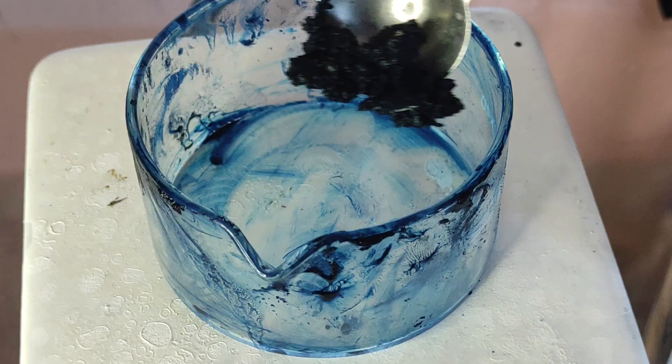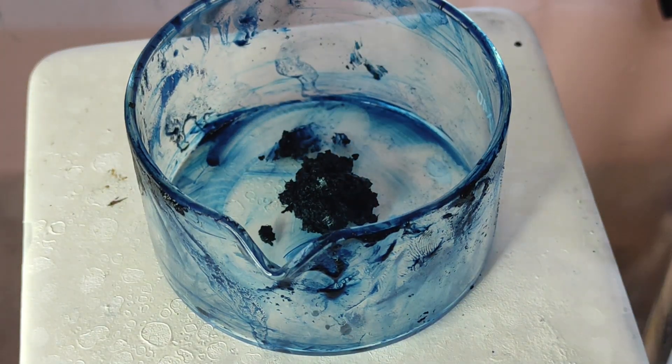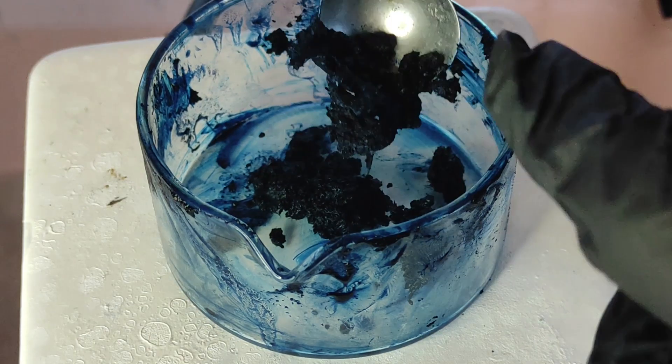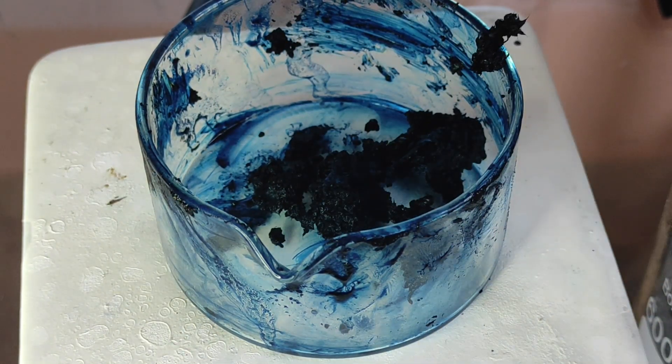After it has finished I started scooping up the Prussian blue from the filter. As you can see the pigment is still a little wet but that's really good because now we can draw with it.